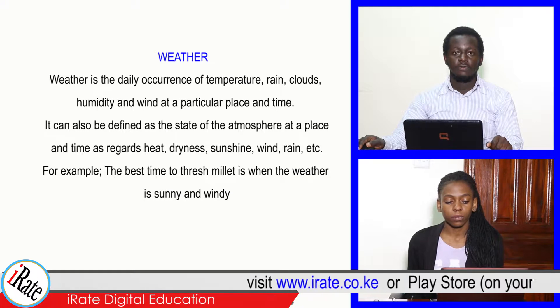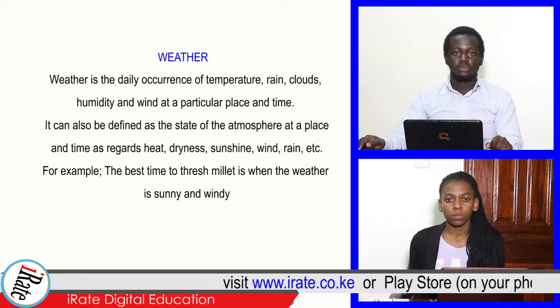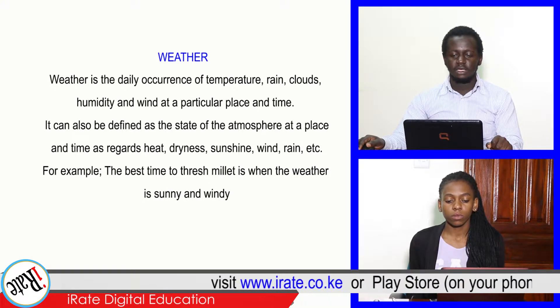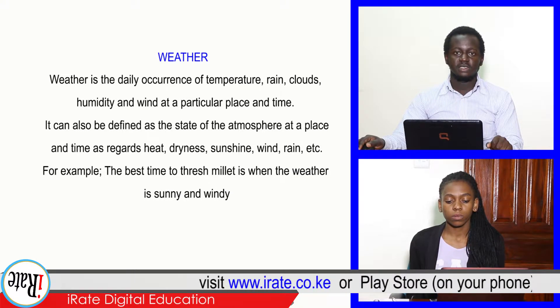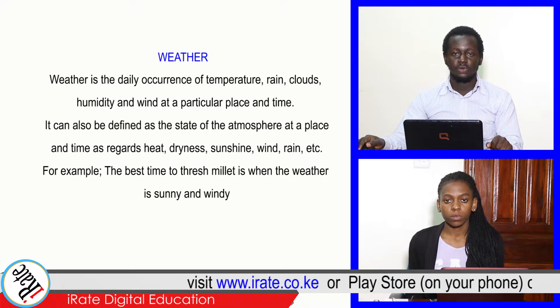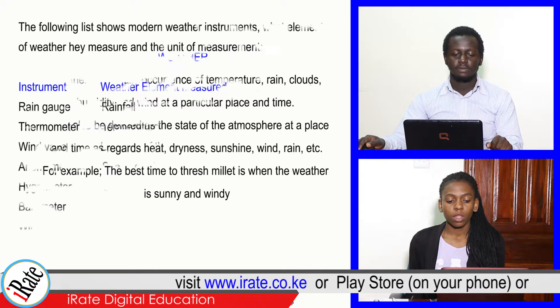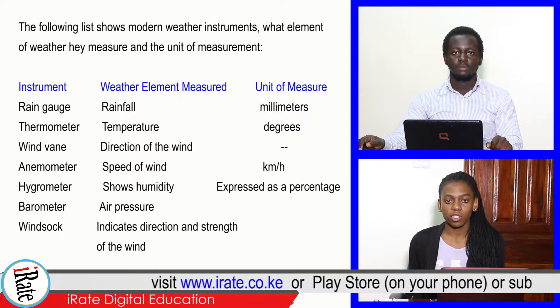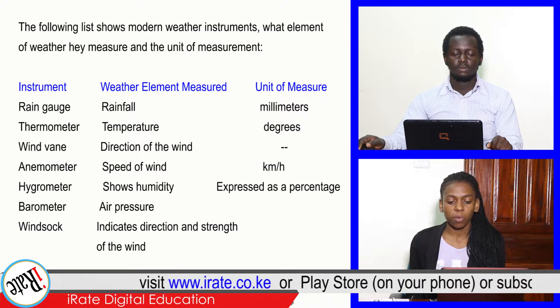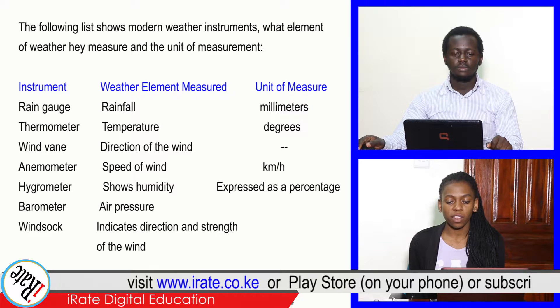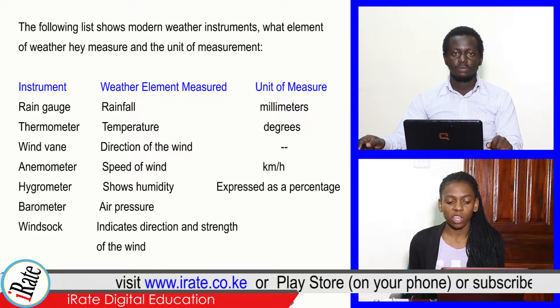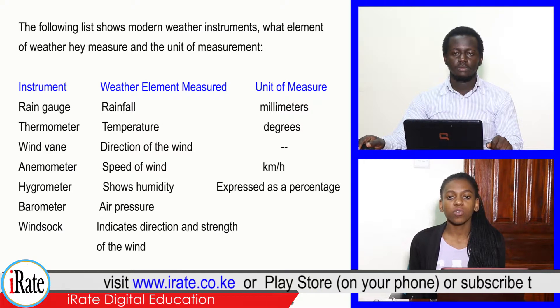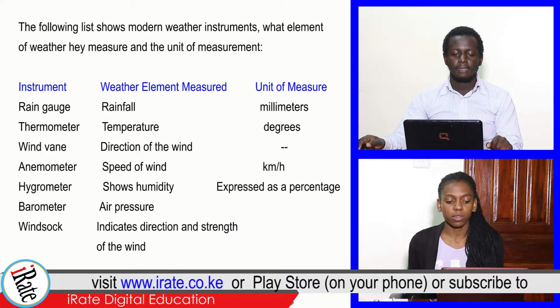For example, the best time to thresh millet is when the weather is sunny and windy. The following list shows modern weather instruments, what element of weather they measure, and the unit of measurement.